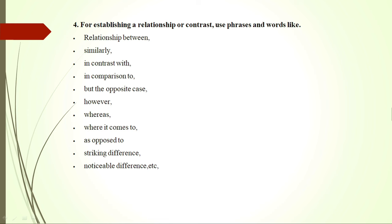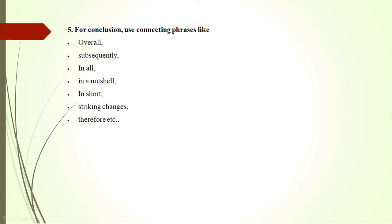To establish a relationship or contrast, use words such as: 'similarly', 'in contrast with this trend', 'in comparison to', 'but in the opposite case', 'however', 'whereas', 'when it comes to'. These words, if you keep them handy, will help you score better marks and help in avoiding repetition. 'Striking difference', 'noticeable difference' — these are phrases you can use in writing analytical paragraphs. For the concluding line, write: 'overall', 'overall the trend shows this', 'subsequently', 'in all', 'in a nutshell', 'in short', 'striking changes', 'therefore', etc. These words and phrases help you get good marks.